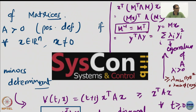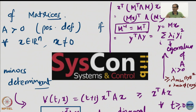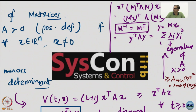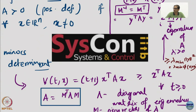Then this quadratic form can be written as y transpose lambda y. All of this is very simple for symmetric matrices — real eigenvalues, diagonalizable naturally. If it is not, then you have more problems, but we are dealing with these nice symmetric matrices.